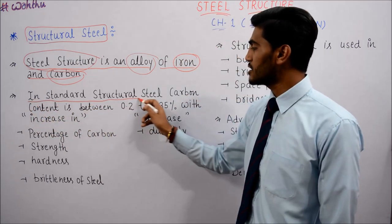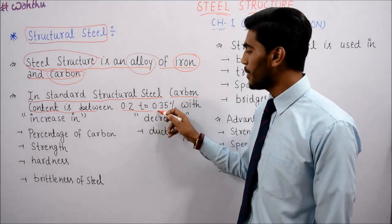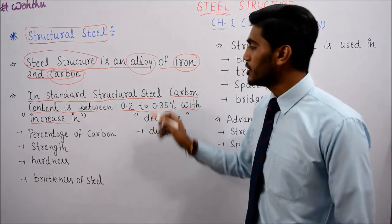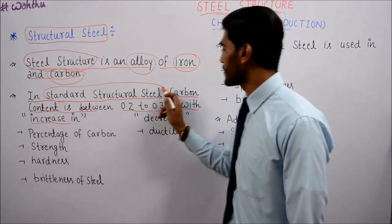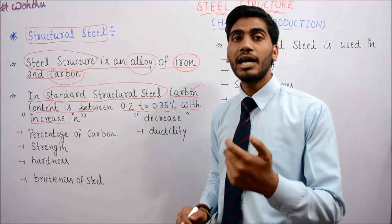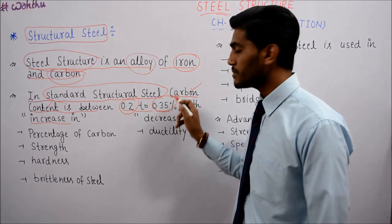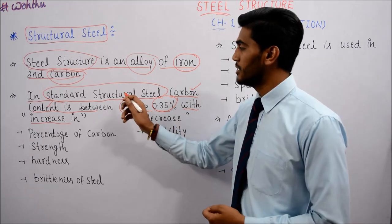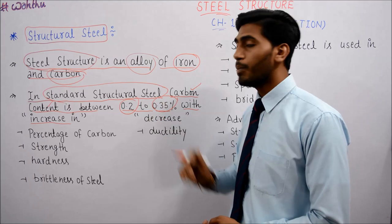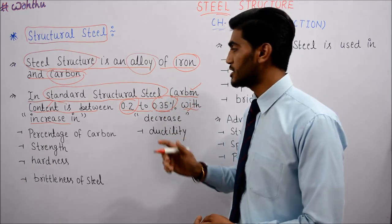In standard structural steel, the carbon content is between 0.2 to 0.35%. So if someone asks what standard structural steel is, you will say: if the carbon content is between 0.2 to 0.35%, it is standard structural steel.